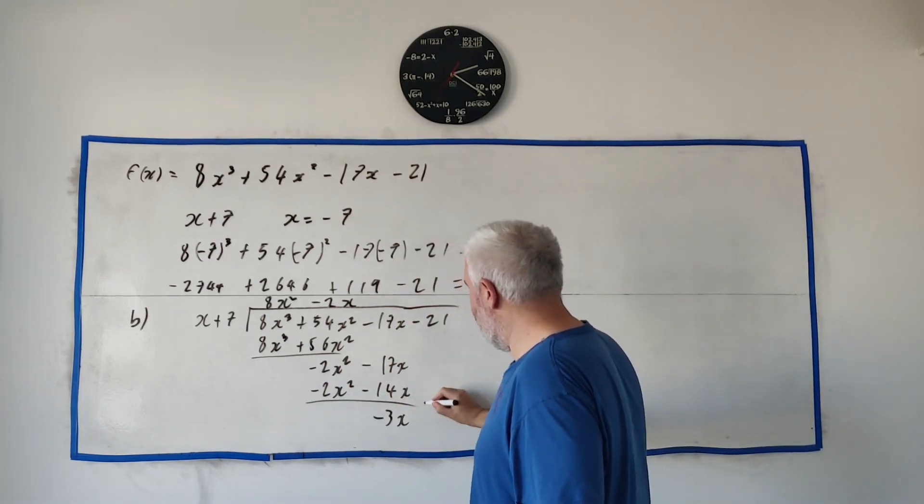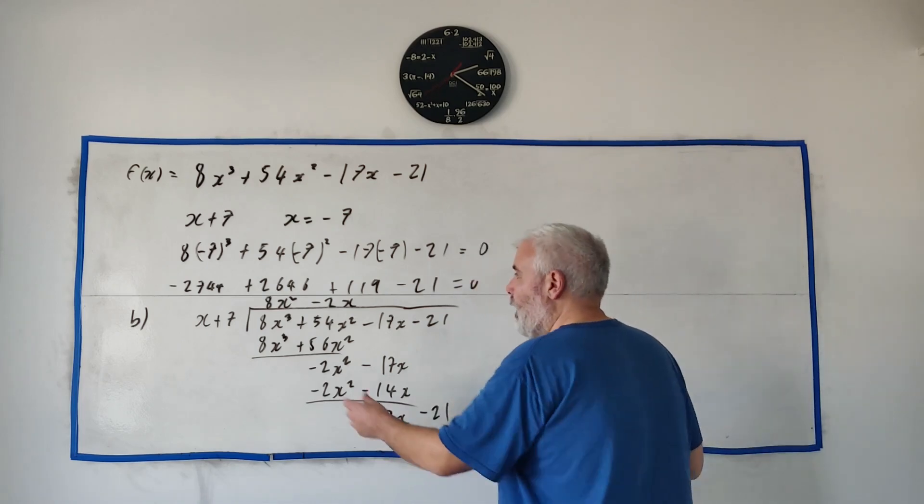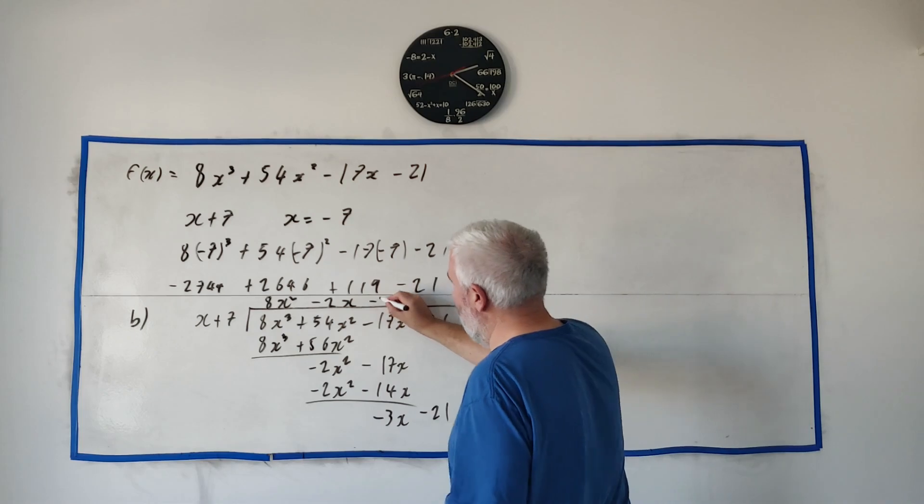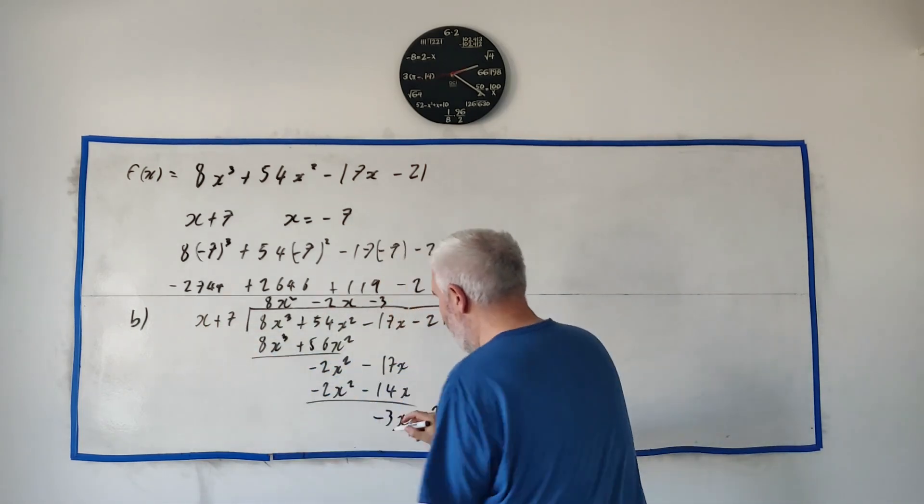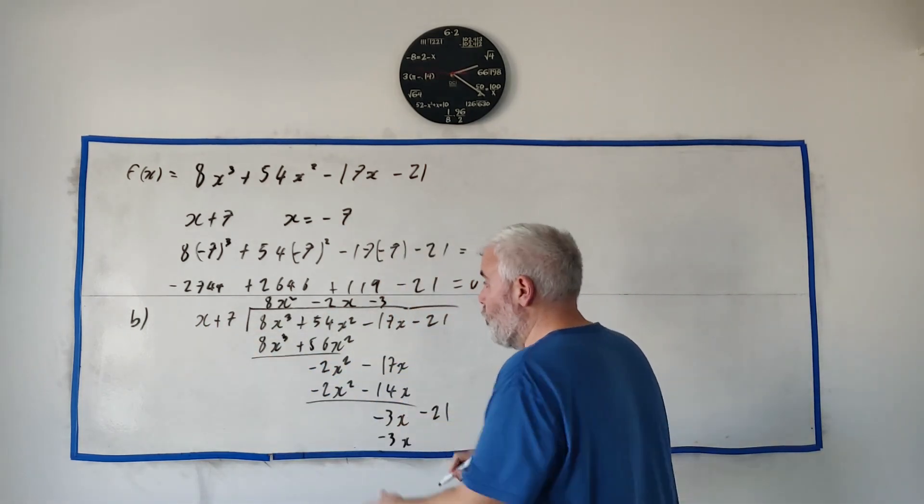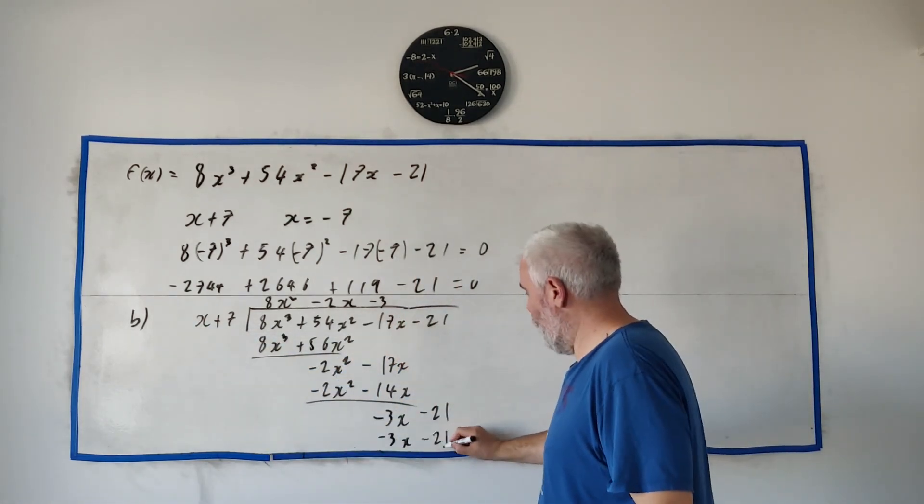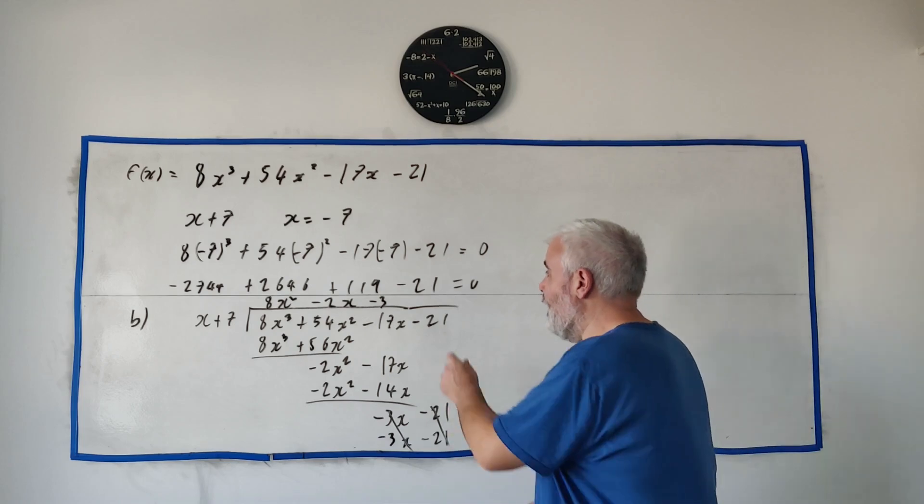Take down to minus 21 how many times does this go into this and actually goes in evenly it goes in minus 3 times. Just to double check that minus 3 back is minus 3x, minus 3 by 7 is minus 21. Goes in evenly. That proves part A but it also is the answer for part B.